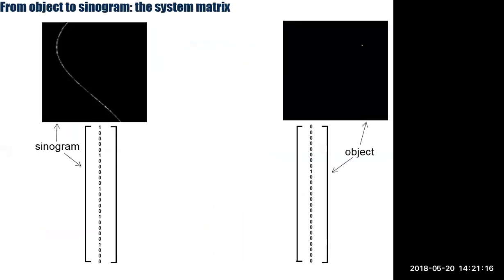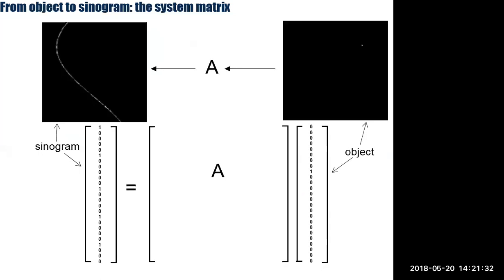We've got object parameters theta, and we want to think about what needs to be in the matrix A for the mapping to hold. If we put a point source in and we're expecting a sine wave output, what does that say about matrix A? It's huge and sparse, and the number of columns equals the number of pixels in the image we want to reconstruct, while the number of rows equals the number of sinogram bins.